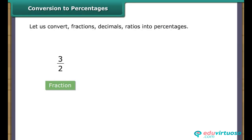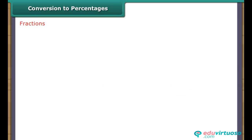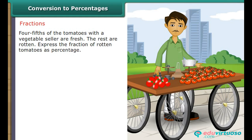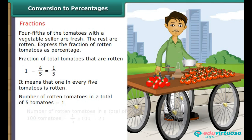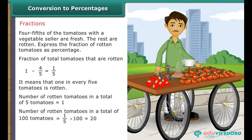Conversion to percentages — Fractions: 4/5 of the tomatoes with a vegetable cellar are fresh; the rest are rotten. Fraction of rotten tomatoes = 1 − 4/5 = 1/5, meaning 1 in every 5 tomatoes is rotten. Number of rotten tomatoes in 100 = 1/5 × 100 = 20. Therefore, 20% of the total tomatoes are rotten.